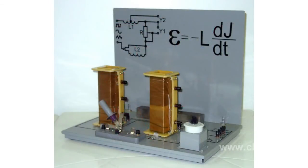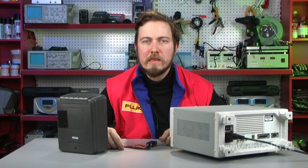The inductance of the circuit is numerically equal to the self-induction EMF that arises in the circuit when the current changes per unit of time. Inductance describes the magnetic properties of a circuit conductor. It depends on the permeability of the core medium, on the size and shape of the core, and the number of loops.